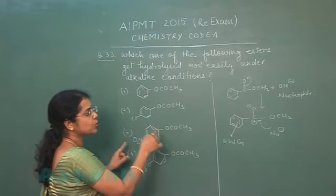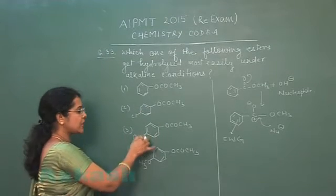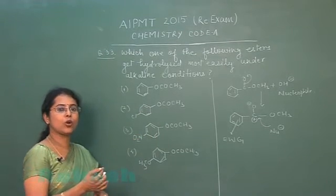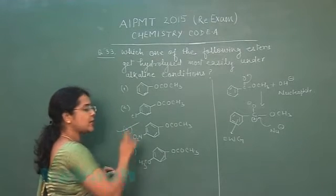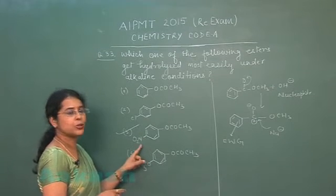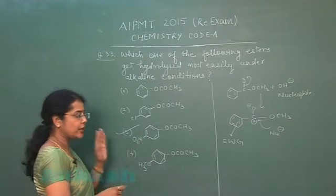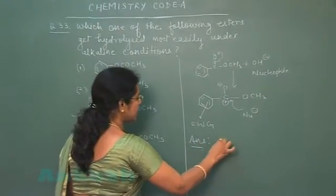So reaction will proceed readily. Now out of these two options, since NO2 is a stronger electron withdrawing group compared to halogen, most speedily the reaction will take place if the group attached to benzene nucleus is NO2. It means in this question, the correct option is third one.